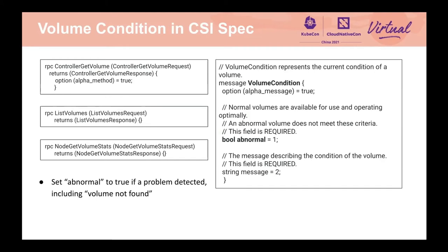Here is how volume condition is defined in the CSI spec. If there is a problem with the volume or the storage system, the abnormal field in the volume condition should be set to true. There is also a message field that you can use to add additional information to explain what the abnormal condition is. Note that if a volume is not found on the storage system, the abnormal field should be set to true so that an event can be reported on the PVC, which is still in the Kubernetes cluster.